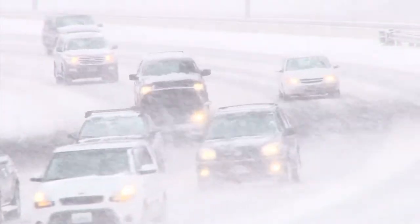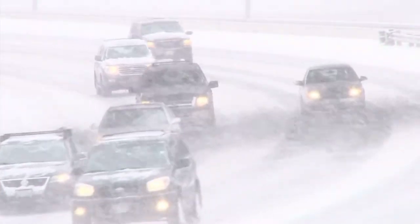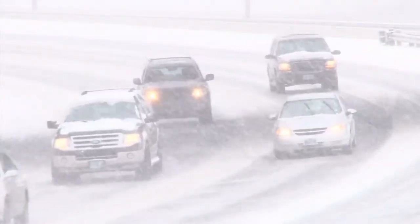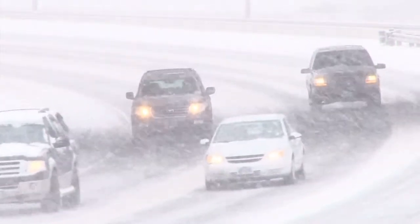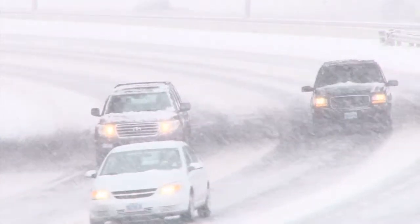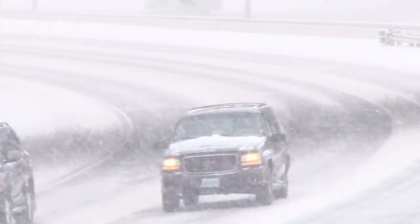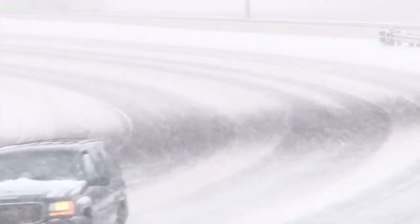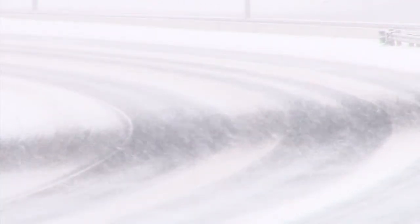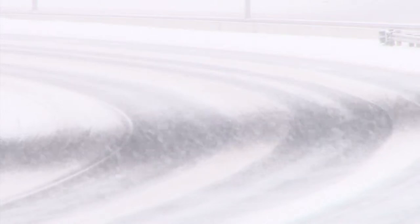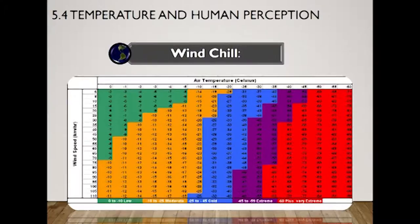In Chicago, for example, wind gusts of up to 24 miles per hour will generate a wind chill temperature of minus 50 or 60 degrees Fahrenheit. But what exactly is wind chill and how does it work?